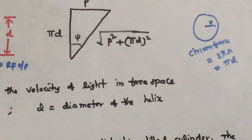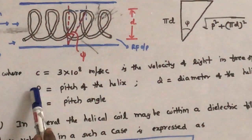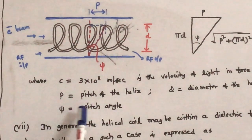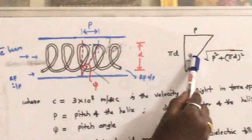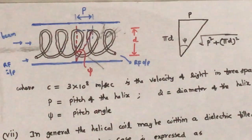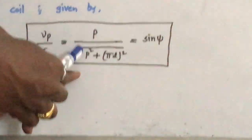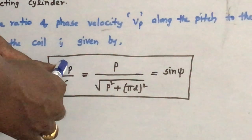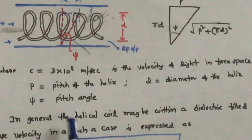Here, c = 3 × 10⁸ m/s is the velocity of light in free space. p is the pitch of the helix, d is the diameter of the helix, and ψ is the pitch angle. From this diagram, sin ψ = opposite side p divided by the diagonal side √(p² + πd²), which is equal to the phase velocity Vp divided by the velocity of light c. So Vp/c = p / √(p² + πd²) = sin ψ.